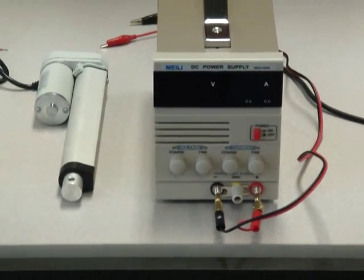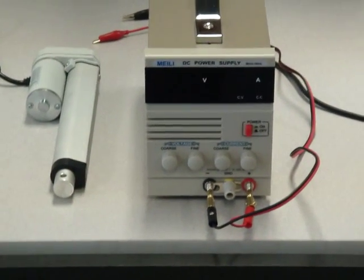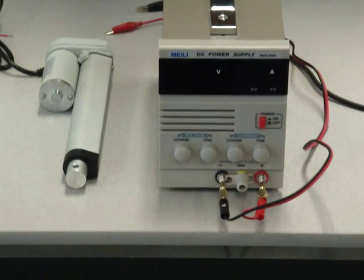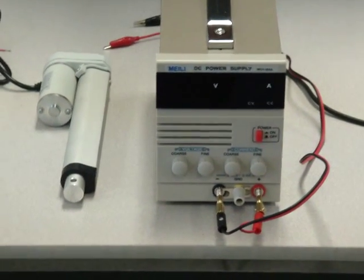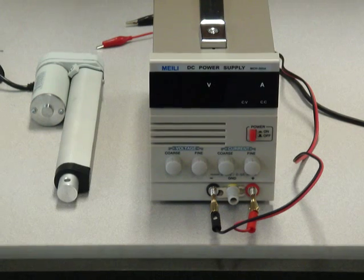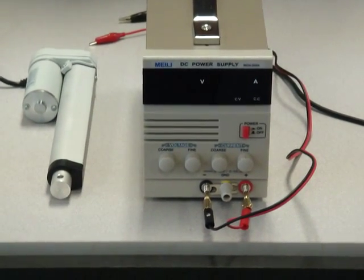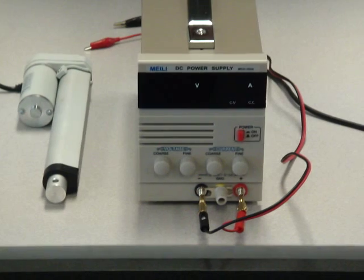Welcome to Progressive Automation's FAQ video section. Today we're going to talk about our internal limit switches. Every unit sold by Progressive Automation has two internal limit switches, one on each end, unless specifically specified by our customers to not have one.